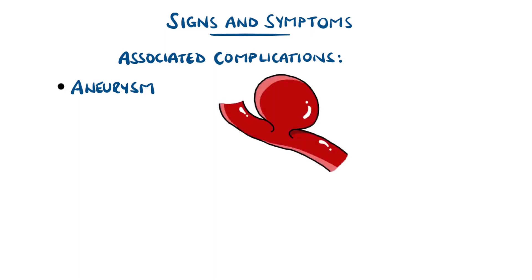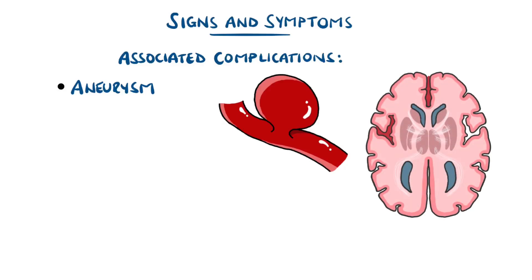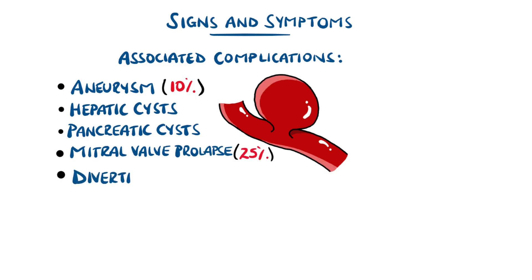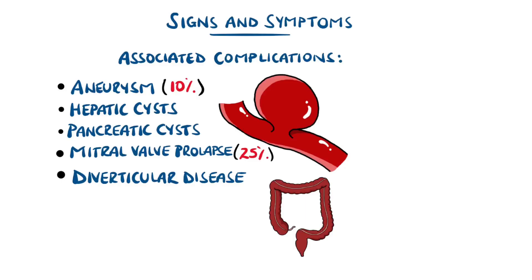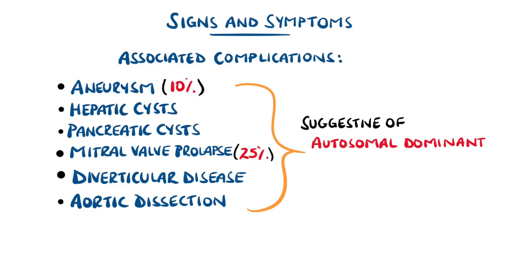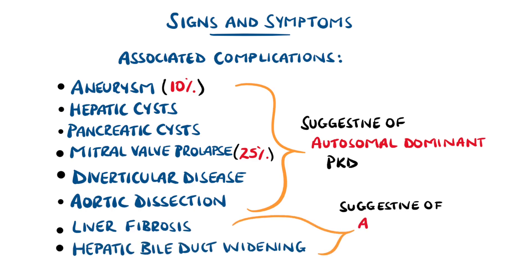There is also a link between autosomal dominant polycystic kidney disease and the presence of aneurysms — for example, in arteries of the brain, which can predispose to intracranial haemorrhage, estimated in 10% of patients, or other arteries like the aorta. Other extra-renal findings are liver and pancreas cysts, mitral valve prolapse in 25%, diverticulosis, and even aortic dissection. These can be a clue to suggest autosomal dominant rather than autosomal recessive polycystic kidney disease, as the latter typically features liver fibrosis and widening of hepatic biliary ducts.